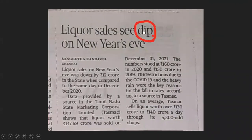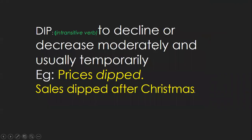Look at this encircled word: 'dip.' What is the contextual meaning of this word? Here, 'dip' acts as an intransitive verb, which means that it doesn't have any object at all.